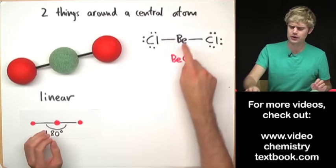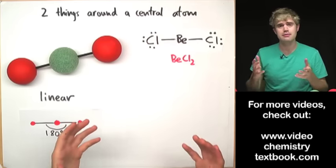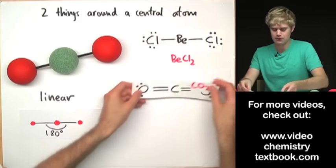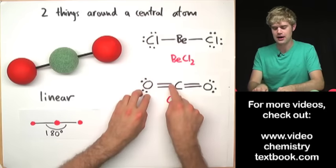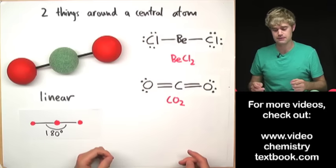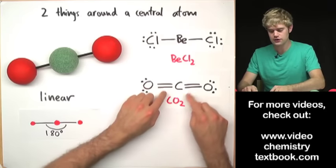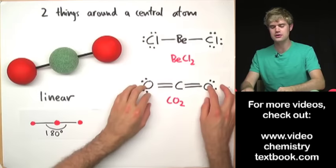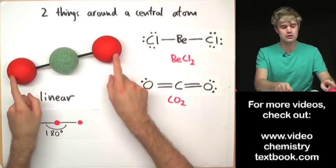In beryllium dichloride I've been talking about single bonds, but it actually doesn't matter whether we've got double bonds or triple bonds. For example, CO₂ has a shape where there's a double bond on each side, but there are electrons in both of these bonds and each double bond just counts as one bond. So for CO₂, I still consider it as just two things around a central atom, and CO₂ is going to have this linear shape too.